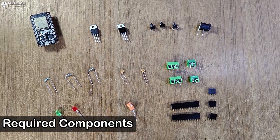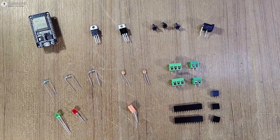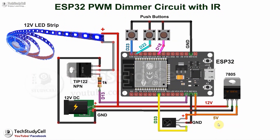These are the required components for this project. You have to connect all these components as per this circuit diagram. The circuit is very simple — here you have to give 12 volt DC supply. For the ESP32 I have used a 7805 voltage regulator, and the IR receiver is connected with GPIO 33. The ESP32 will generate a PWM signal at GPIO 13, which is connected with the base of the TIP122 NPN transistor. According to the PWM signal, the transistor will turn on and off to control the LED brightness.